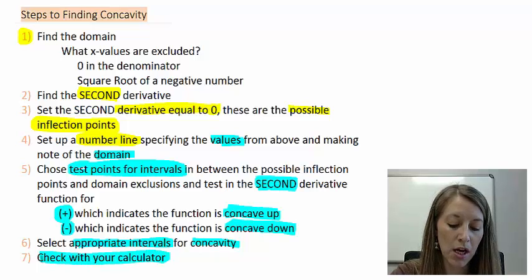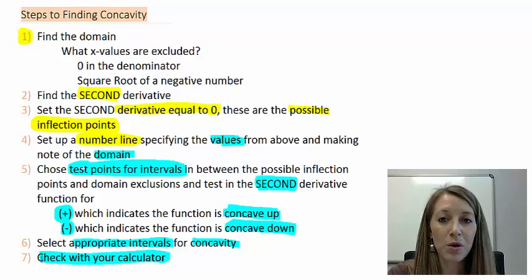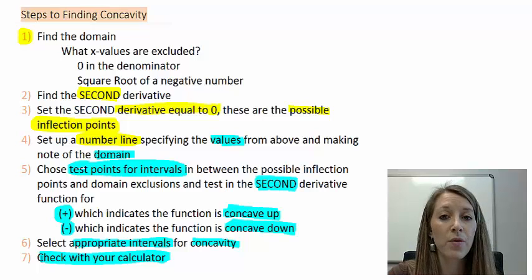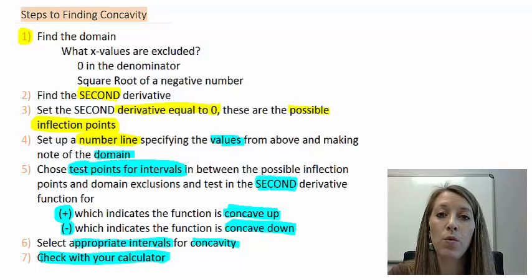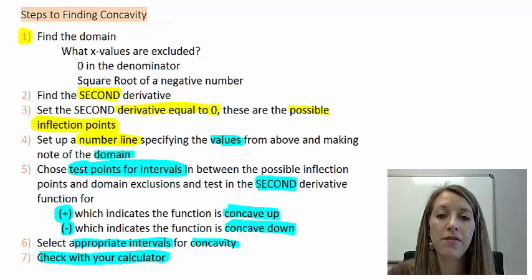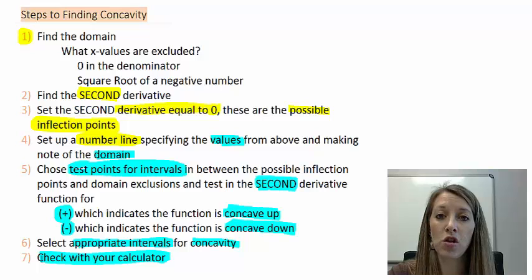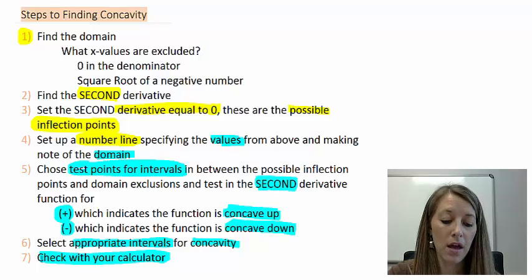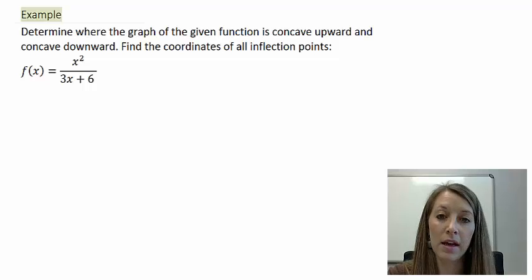Once we get all our answers figured out, I always recommend to double check with your calculator. Now, one more time — since I'm the teacher, these are the steps I'll give in this order. But if I was a student, I would probably move step seven up to step one, because I'd want to check as I'm doing it and not at the very last step. If you do the calculator first, you can check little things along the way and fix any mistakes before moving on. Now that we have these steps, let's use them in an example.